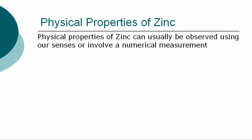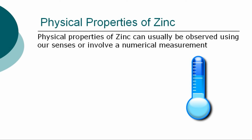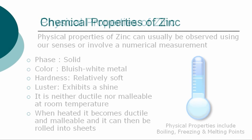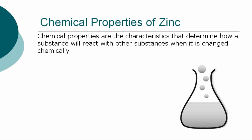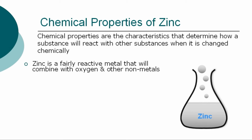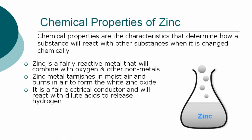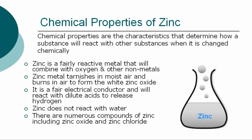The physical properties of zinc can usually be observed using our senses, or involve a numerical measurement, such as determining its boiling, freezing, and melting points. Zinc is a solid, bluish-white, relatively soft, shiny metal. It is neither ductile nor malleable at room temperature; however, when heated, it becomes ductile and malleable and can then be rolled into sheets. Zinc is a fairly reactive metal that will combine with oxygen and other nonmetals. Zinc metal tarnishes in moist air and burns in air to form the white zinc oxide. It is a fair electrical conductor and will react with dilute acids to release hydrogen. Zinc does not react with water. There are numerous compounds of zinc, including zinc oxide and zinc chloride.